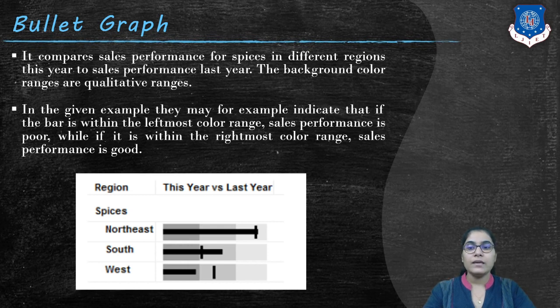While if it is within the rightmost color range, sales performance is good. So from the given example we can conclude that the sales performance of northeast is excellent, where the sales performance of south is average, whereas the sales performance of west is poor because it is on the leftmost side of the graph.